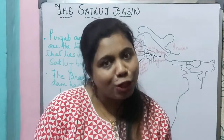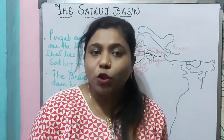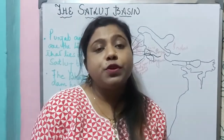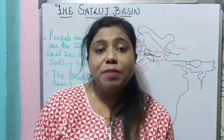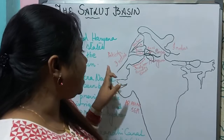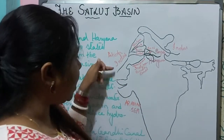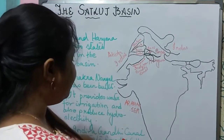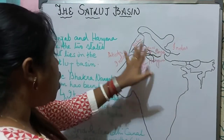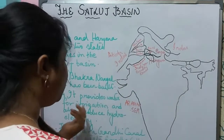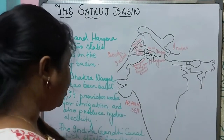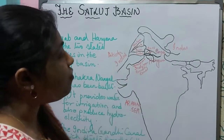To summarize: the Satluj basin is located in the west. Satluj is the easternmost tributary of river Indus and the longest of the five rivers. It is also known as Shatadru. It meets the Beas, and both flow southwestward to meet Indus in Pakistan before draining into the Arabian Sea. The two states in the Satluj basin are Punjab and Haryana. The Bhakra Nangal Dam on the Satluj provides water for irrigation and produces hydroelectricity. The Indira Gandhi Canal starts from the Satluj and provides water to the drier parts of Rajasthan.